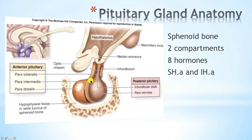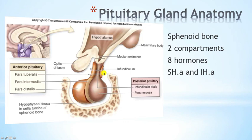The anterior pituitary gland consists of three parts: pars distalis, which is the main part of the anterior pituitary gland; pars intermedia, which is a portion that separates the posterior and anterior compartment; and pars tuberalis, which surrounds the infundibular stalk.